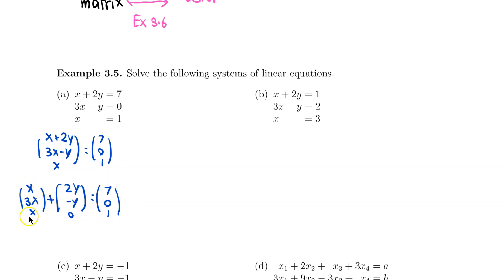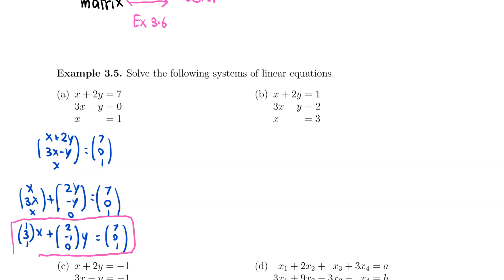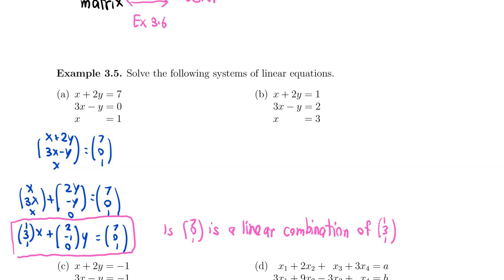If I pull out the common factor x, I'm going to have (1, 3, 1) times x, plus, if I pull out y from the second vector, I'm going to have (2, −1, 0) times y. This has to equal (7, 0, 1). If we look closely at this equation, this is basically asking: is the vector (7, 0, 1) a linear combination of the other two vectors — (1, 3, 1) and (2, −1, 0)?